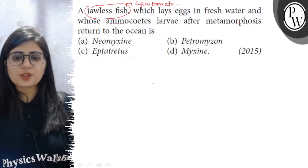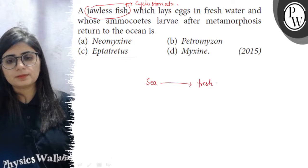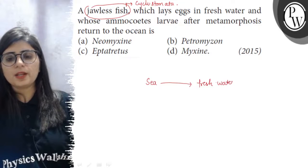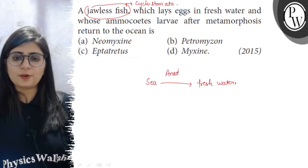If a fish lives in sea and it migrates to fresh water for spawning or for laying egg, such a migration is called the Anadromous migration.